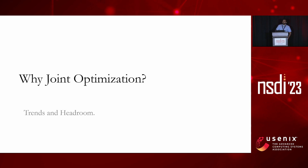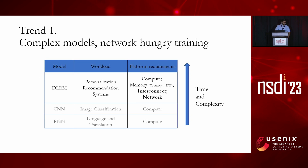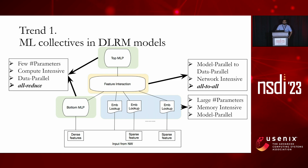Why should we be doing joint optimization? I'll identify two main trends and show how existing optimizations fare in speeding up network operations, demonstrating clear headroom from joint optimization. The first trend is that models are becoming more complex and less compute bound — they are becoming network bound. A prime example is deep learning recommendation models at large social media companies. These models are very network hungry when it comes to training.